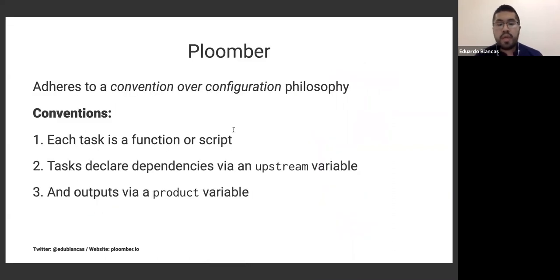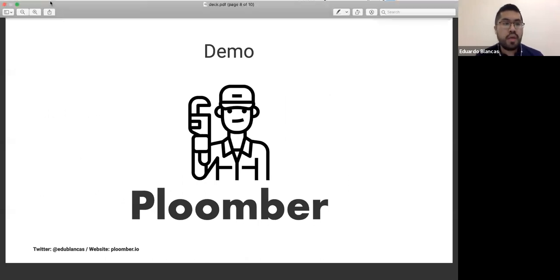Now let's talk about Plumber. Plumber is a workflow manager that adheres to a convention over configuration philosophy. This idea was popularized by Ruby on Rails. The basic idea is that if you follow certain rules, you avoid having to write a lot of code. What are the rules in Plumber? Each task is a function or a script. Tasks declare dependencies via an upstream variable. Outputs are declared via a product variable. That's it.